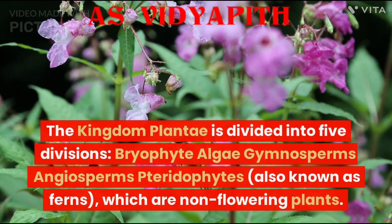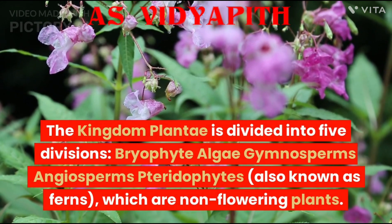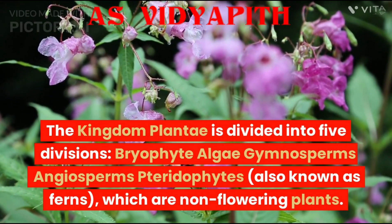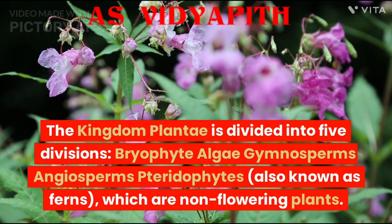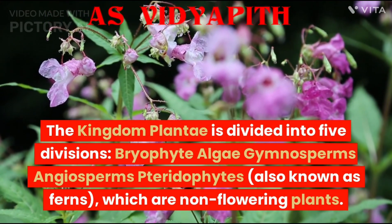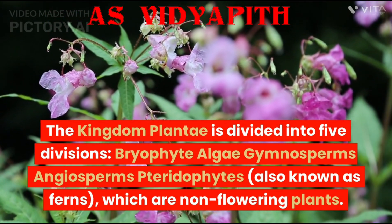The Kingdom Plantae is divided into five divisions: Bryophytes, algae, gymnosperms, angiosperms, and pteridophytes — also known as ferns — which are non-flowering plants.